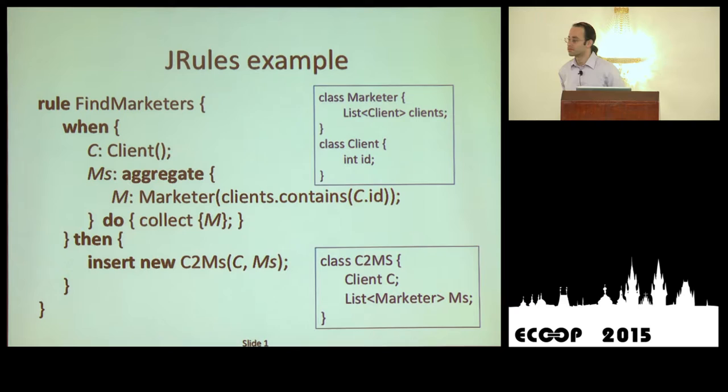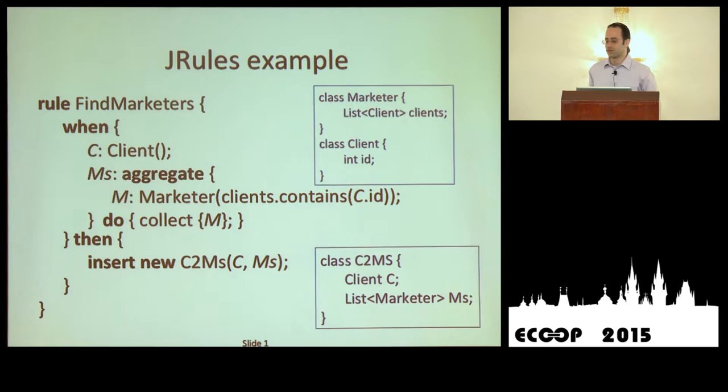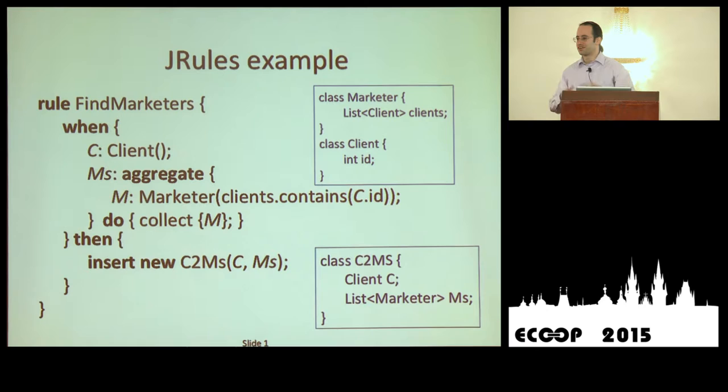In response to a clarifying question: the clients field in this example is a list of IDs — integers or strings, whatever we're using for IDs. Despite how it sounds, this example does compile with the system I'm showing you later.